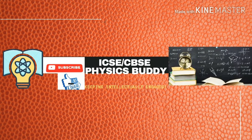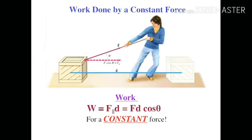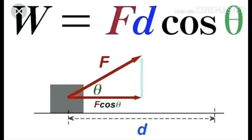Hello everyone. Yesterday we studied how to measure the work done when the force and the displacement are in the same direction — that is, when the body moves in the direction of the force applied. In that case, work done is equal to F into S, the product of force and displacement.